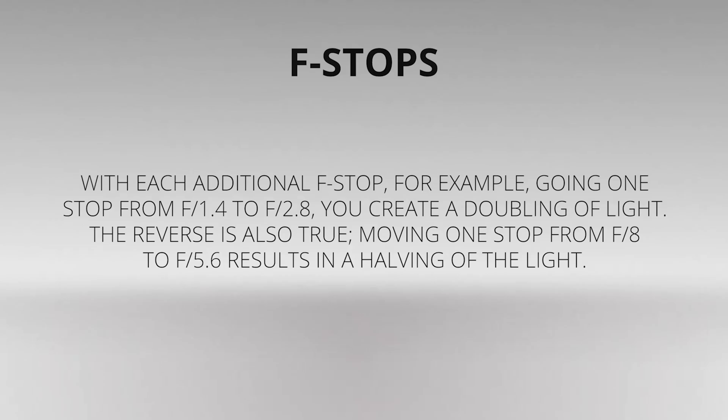With each additional f-stop — for example, going one stop from f1.4 to f2.8 — you create a doubling of light. The reverse is also true: moving one stop from f8 to f5.6 results in a halving of light.